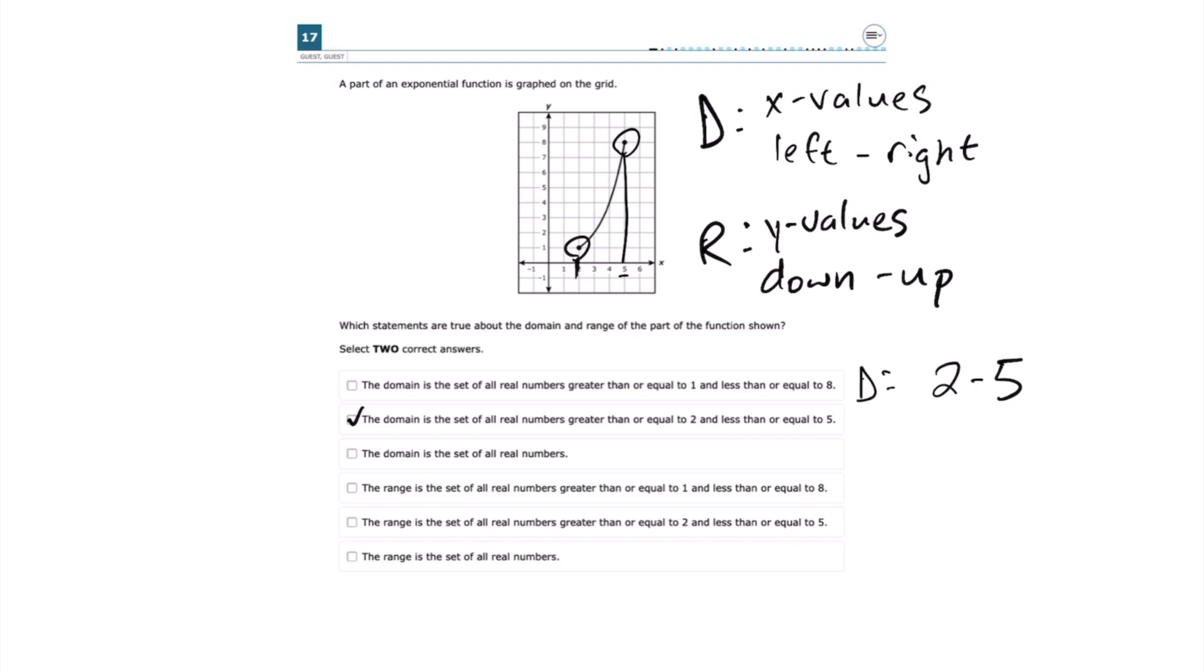Now we're going to do the same thing with the range. Range is all the possible y-values. We're looking down to up on the y-axis. The furthest down point we have on the graph is right here. On the y-axis, that equals positive 1. I'm going to put R and start with 1. It's a filled in circle, so it does include positive 1.